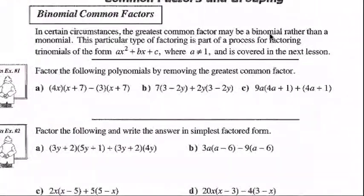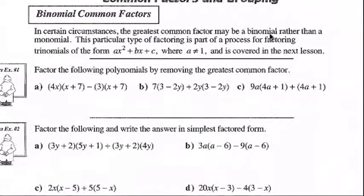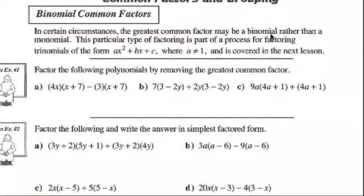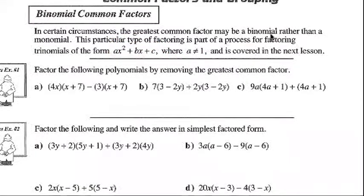As you can see, it says that in certain circumstances the greatest common factor may be a binomial rather than a monomial. This particular type of factoring is part of a process for factoring trinomials in the form ax² + bx + c, where that first term in front of x² is something other than one. And that's what we'll cover next lesson with factoring by decomposition.